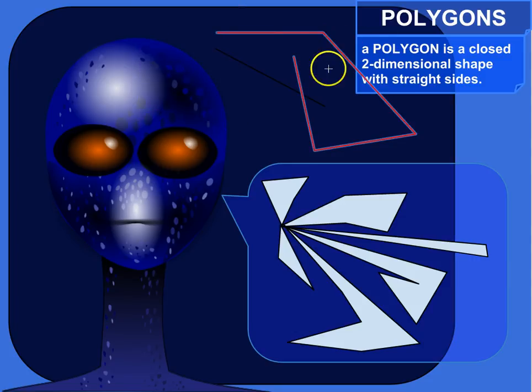That is not a polygon. It is two-dimensional. It's a flat shape. And it's got straight sides, but it's not closed. See how it's open here? It doesn't really have an inside, at least not an inside that's completely bounded.